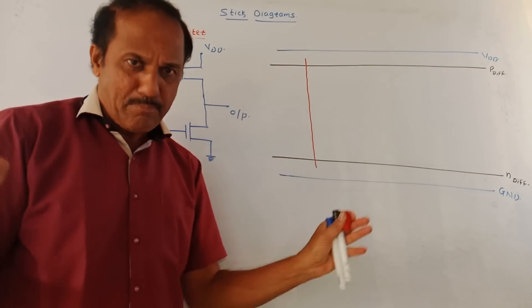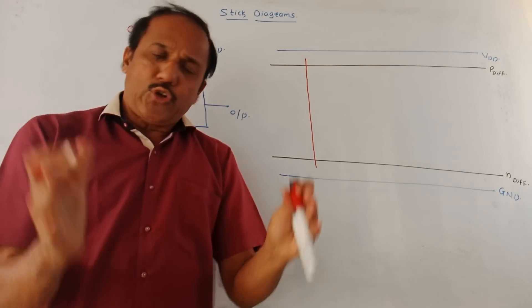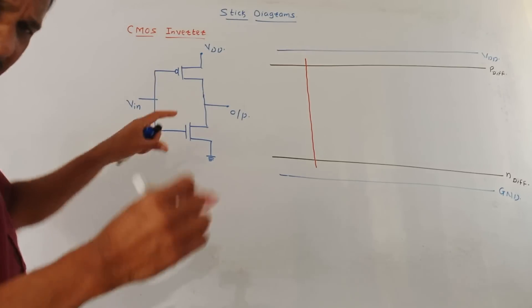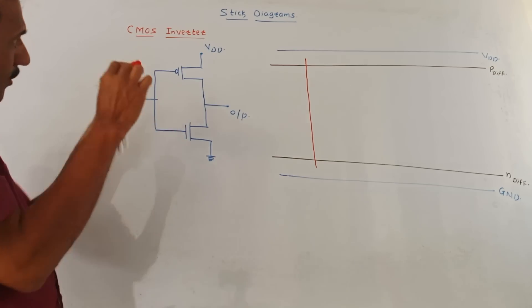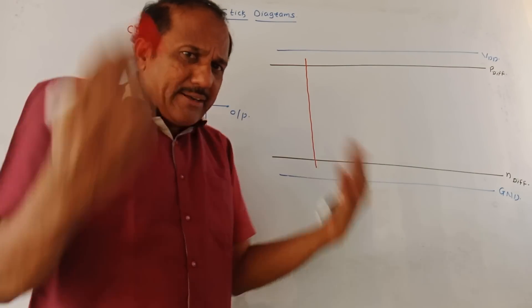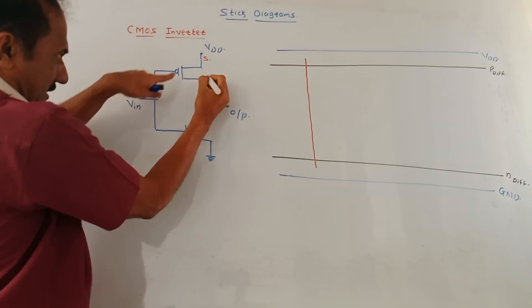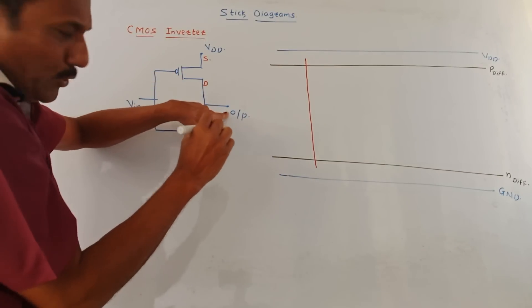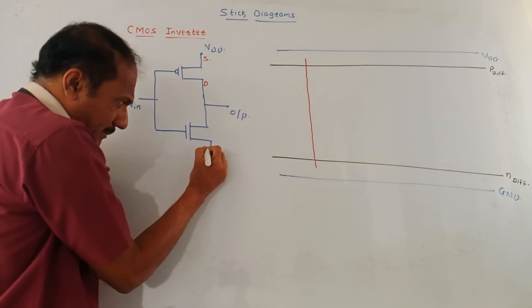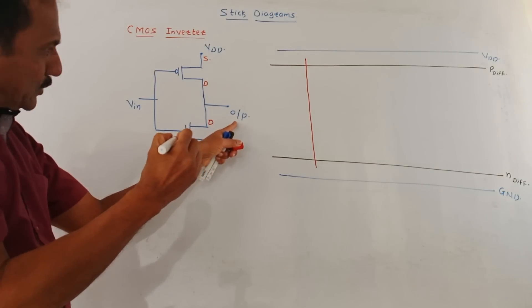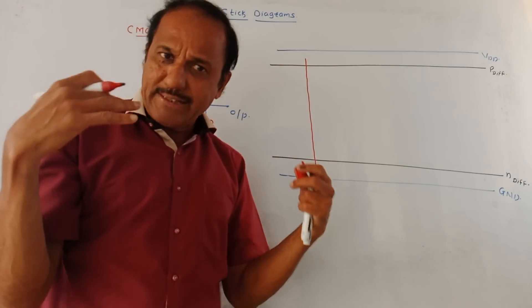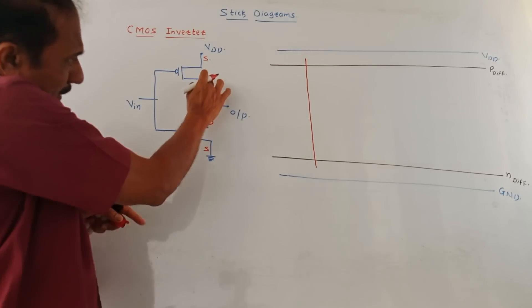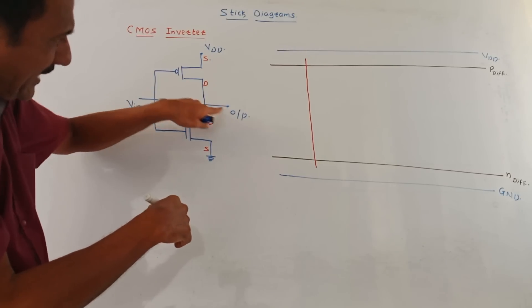To make things simple, in the CMOS circuit diagram, get into the habit of marking source and drain terminals. For PMOS, the upper terminal is source — connected to VDD — and the lower terminal is drain from where we take the output. For NMOS, the lower terminal is source and the upper terminal is drain, from where the output is taken. Whenever the polysilicon layer intersects the diffusion layer, a transistor is formed — this gives us the PMOS and NMOS transistors.